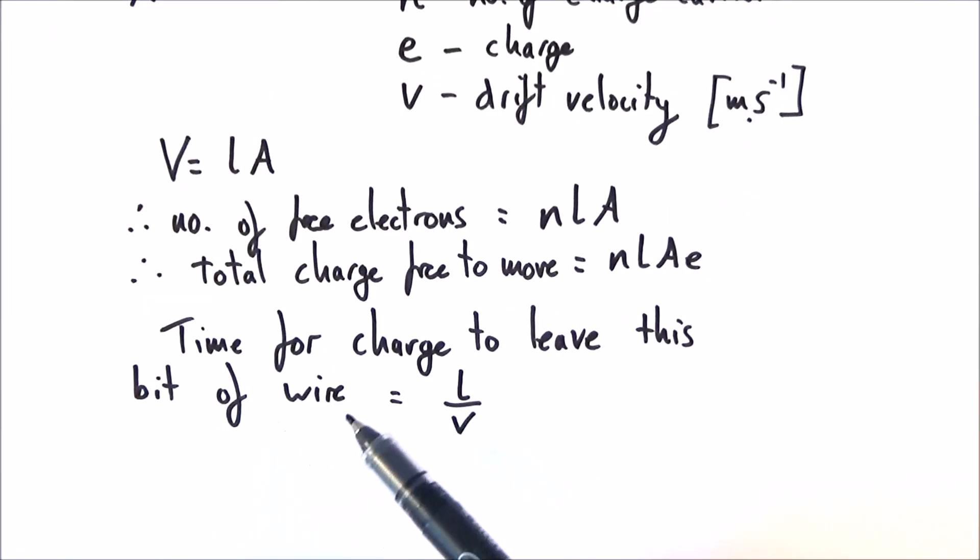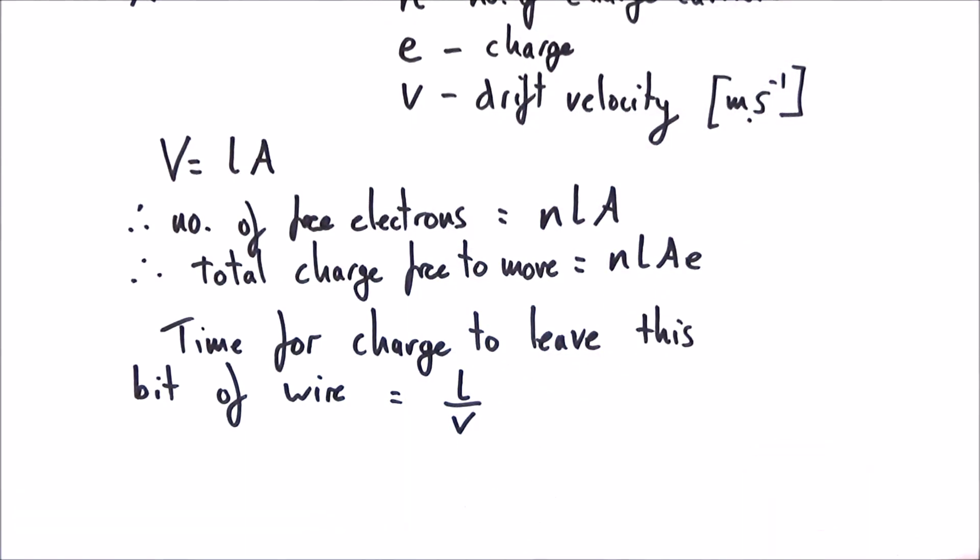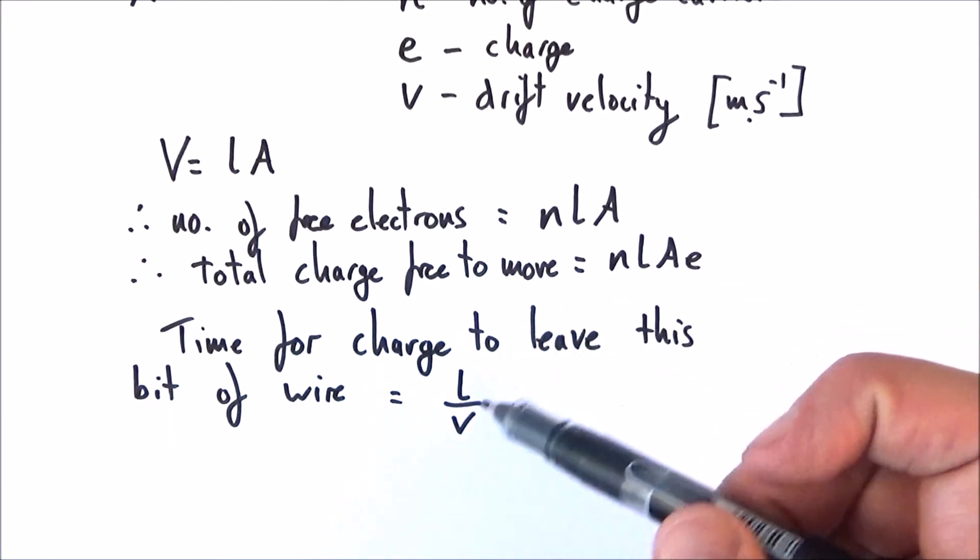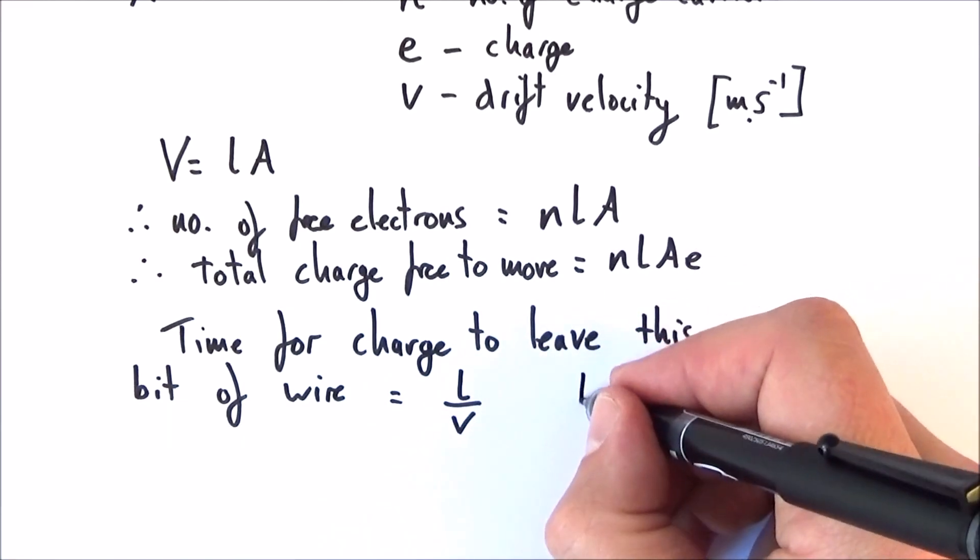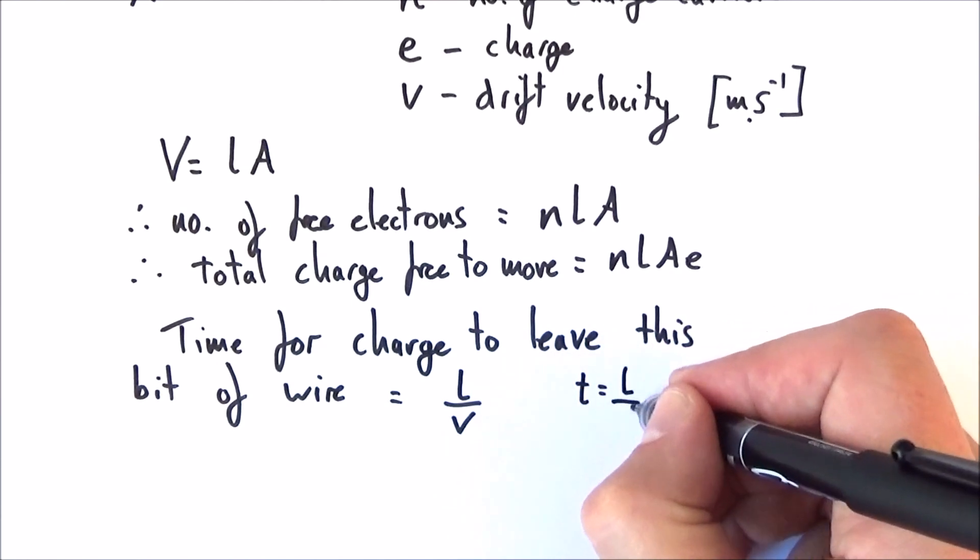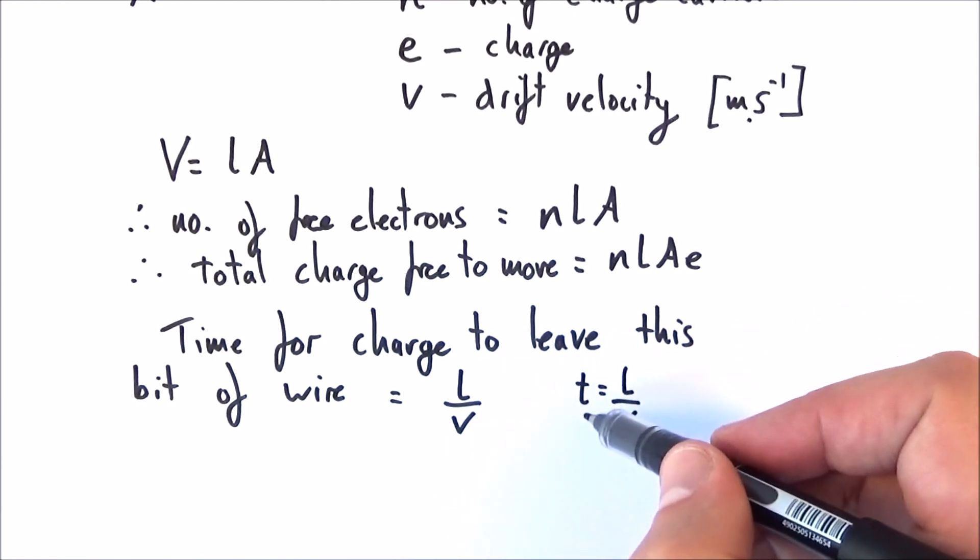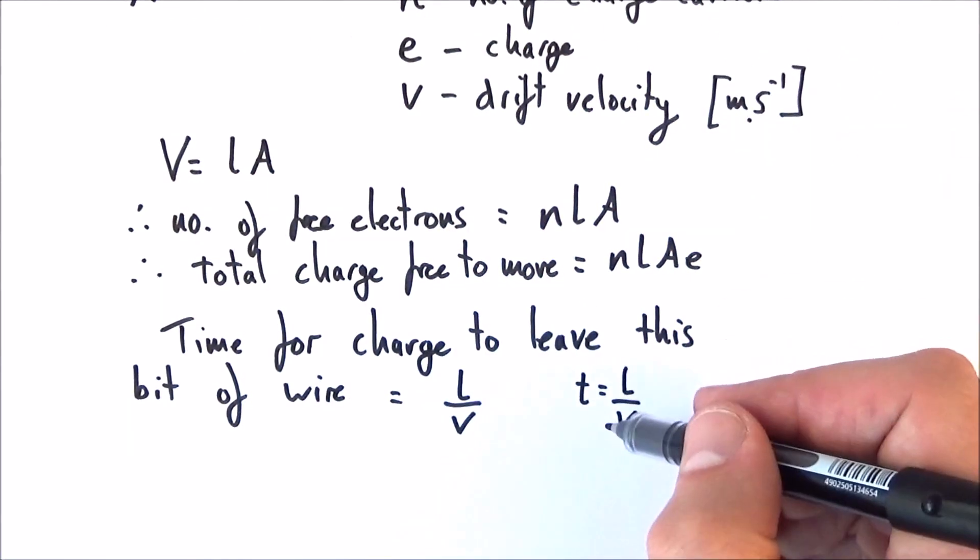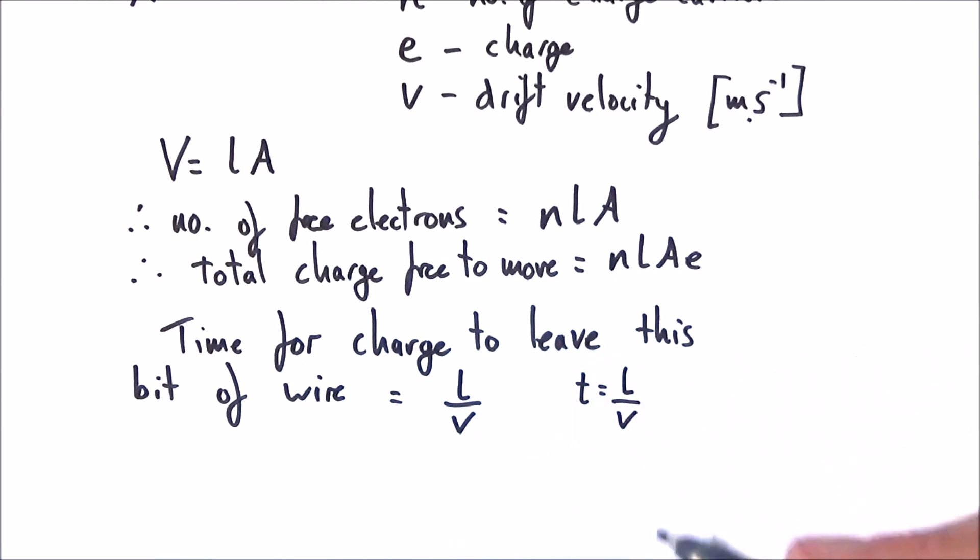Now, the next thing you need to know is that the time it takes for the charge to leave this bit of wire to all flow out of one face is equal to L over V. Why is that? Well, we can use the equation speed equals distance over time. We can rearrange to say that the time is equal to the distance divided by the speed. And therefore, the time for all of this charge to basically move along and move through this section is equal to t, which is equal to L over V.